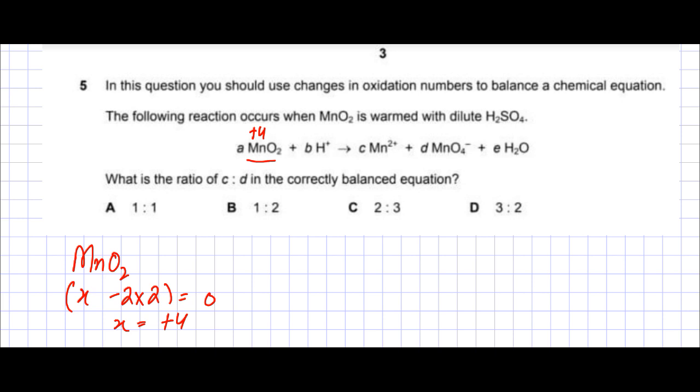H is obviously plus 1, so we don't have to think about H. Mn over here is plus 2, so that means it's getting reduced. The charge is decreasing.